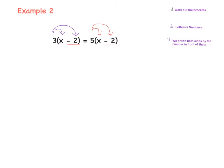3 by x is 3x, 3 by minus 2 is minus 6, equals 5 by x is 5x, and 5 by minus 2 is minus 10. So we have the first step done.